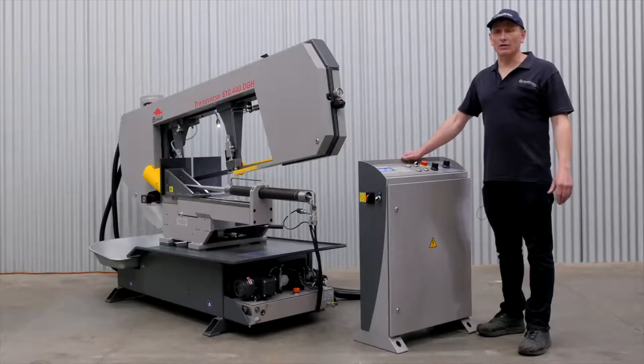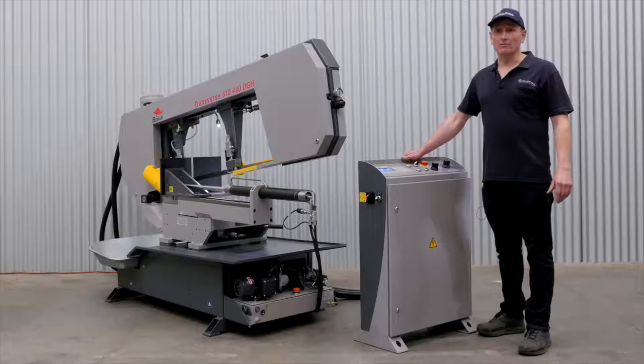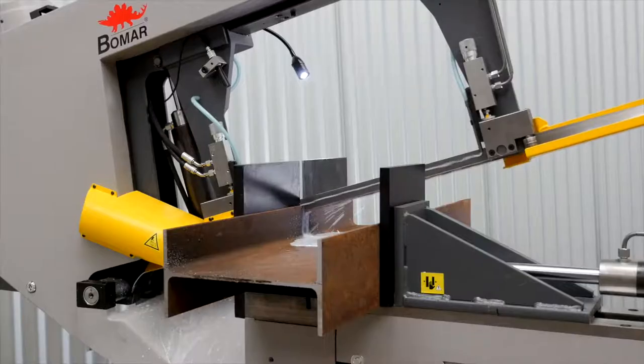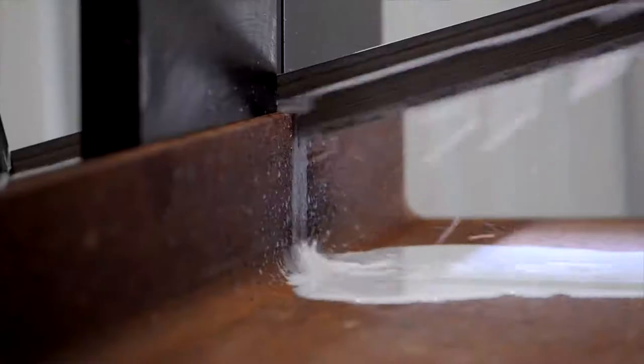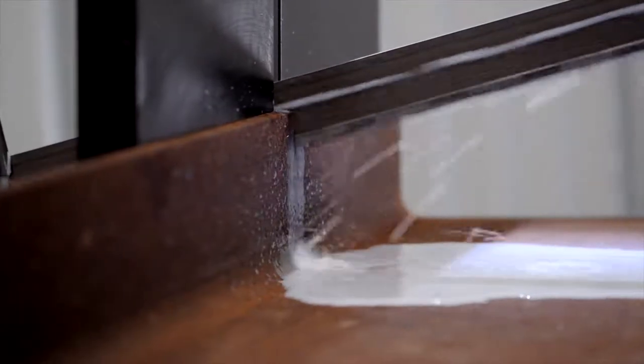Hi, Cameron here from Capital Machinery with a BOMA 610 440 DGH double mitre bandsaw. A great machine for cutting heavy structural and solid materials. This machine is suitable for serious steel processing when accuracy and reliability is required.